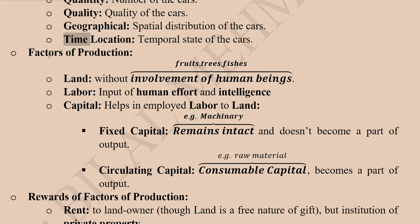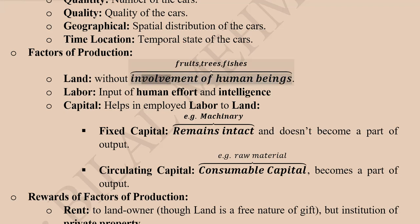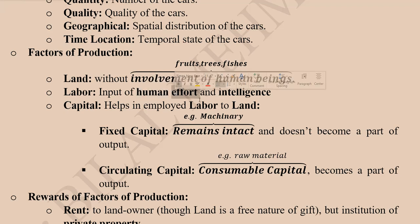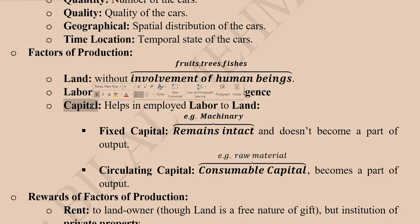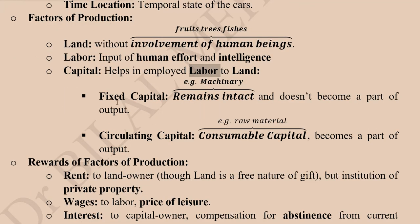There are factors of production that combine to give rise to production. Land can yield output even without human involvement — fruits, trees, and fish grow without labor input. Labor contributes effort and intelligence. Capital is used to engage land and labor, and it comes in two forms: fixed capital and circulating capital.